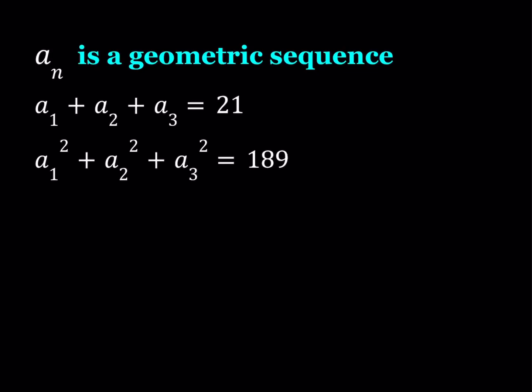Hello everyone. In this video, we're going to be solving for a geometric sequence. a_n is a geometric sequence, and we are given two equations. The first is a_1 plus a_2 plus a_3 equals 21 — the sum of the first three terms. We're also given the sum of the squares of the first three terms, and we're going to try to find the sequence from here.